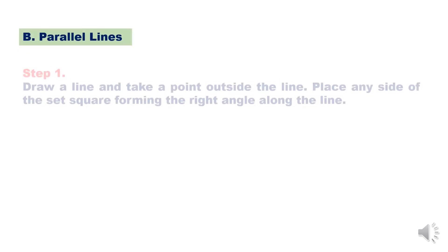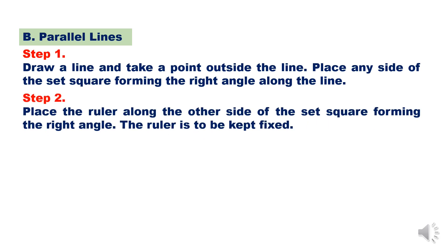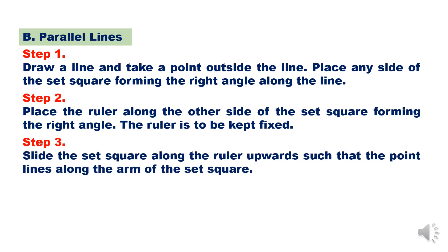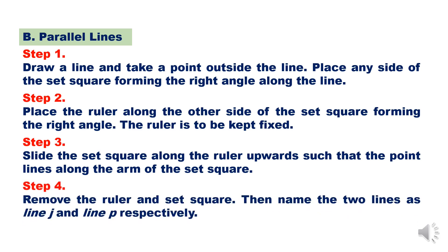Parallel lines. Step 1 — draw a line and take a point outside the line. Place any side of the set square forming the right angle along the line. Step 2 — place the ruler along the other side of the set square forming the right angle. The ruler is to be kept fixed. Step 3 — slide the set square along the ruler upwards such that the point aligns along the arm of the set square. Step 4 — remove the ruler and set square, then name the two lines as line J and line P respectively.